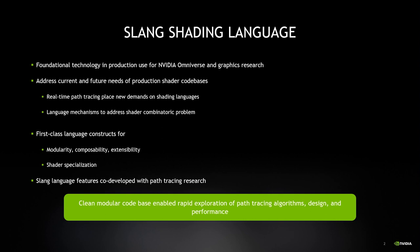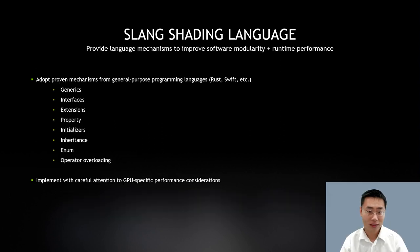There is also this long-standing shader combinatorics problem. While we still don't have a full solution today, Slang gives applications mechanisms to manage and control shader specializations more easily. Slang's language design is a result of close collaboration with our users from the production and research groups, ensuring the new language features are implemented in a way that is actually useful. At NVIDIA research, these new Slang features play a very important role in enabling rapid exploration of new rendering features and new APIs.